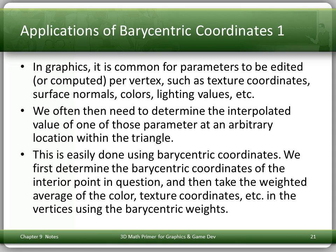In graphics, it's common for parameters like texture coordinates, surface normals, colors, or lighting values to be computed per vertex. We often need to determine the interpolated value of one of these parameters at an arbitrary location inside the triangle. This is easy to do using barycentric coordinates: determine the barycentric coordinates of the interior point, then take the weighted average of the vertex values using barycentric weights.